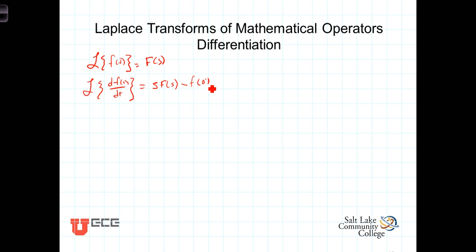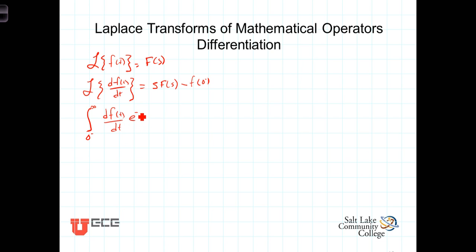Let's go ahead and derive this. By definition, the Laplace transform is the integral from 0 minus to infinity. We're taking the Laplace transform of df(t)/dt — this is the function of time that we're going to transform — multiplied by e to the minus st dt. So we have two functions of t: the derivative of the function, and this e to the minus st, and we want to integrate the product of those two.